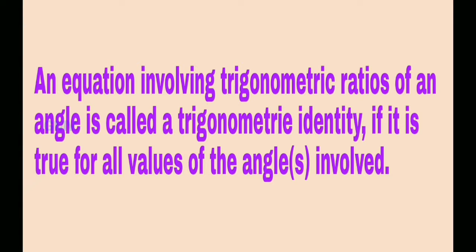An equation involving trigonometric ratios of an angle is called a trigonometric identity if it is true for all values of the angles involved. This means if you take any values for the angles, those trigonometric identities will be satisfied. Let us now derive the trigonometric identities.